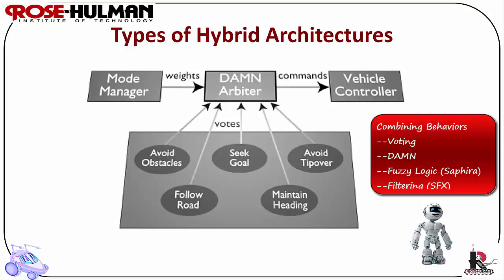DAM was used to control a van that autonomously drove on roads over very large distances. In DAM, several low-level actions are voting members and the result is a weighted sum of actions — an example of command fusion that was later improved with fuzzy logic. Formal methods for command fusion include potential fields, motor schema, and dynamical systems.